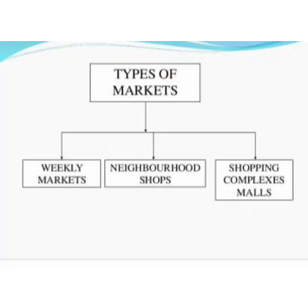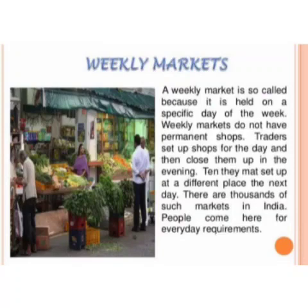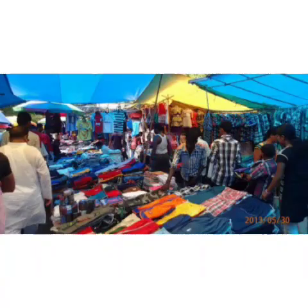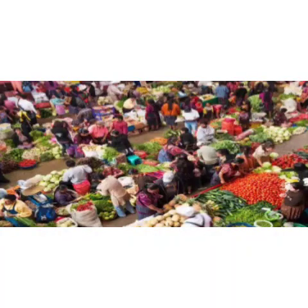Weekly markets are held once in a week, in a particular area on any one of the weekdays. These markets can be seen especially in small towns and big villages with makeshift shops. They sell goods of daily use such as clothes, vegetables, utensils, and plastic items at much lower prices than in big shops. The sellers move to another weekly market the next day, keep moving from one weekly market to another to sell their goods.